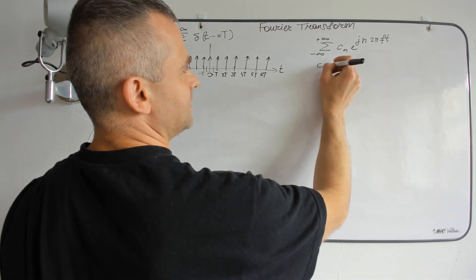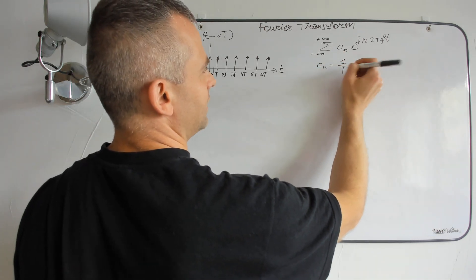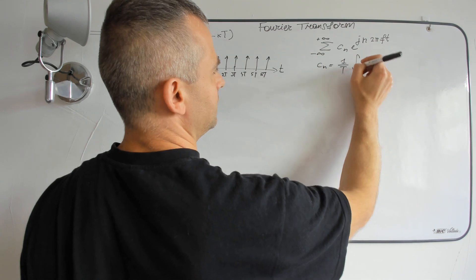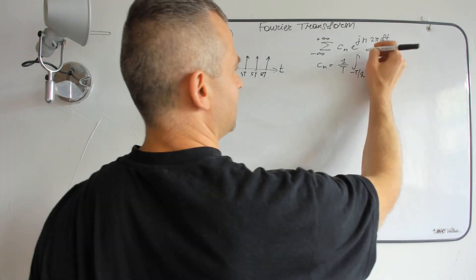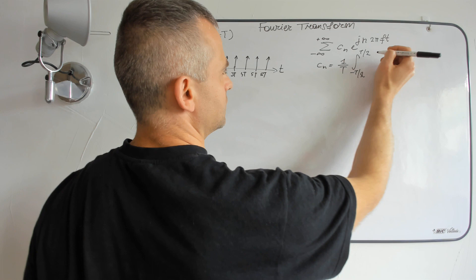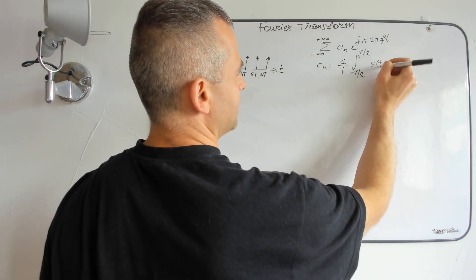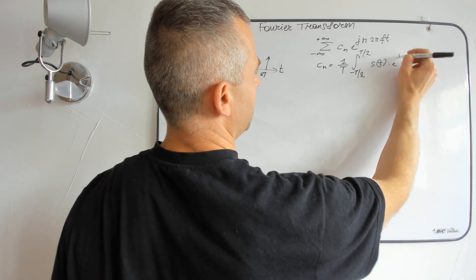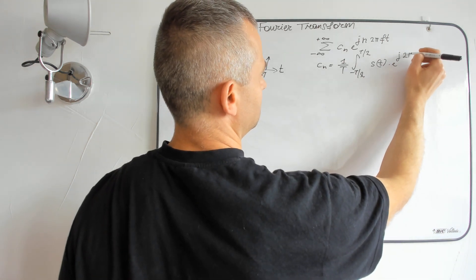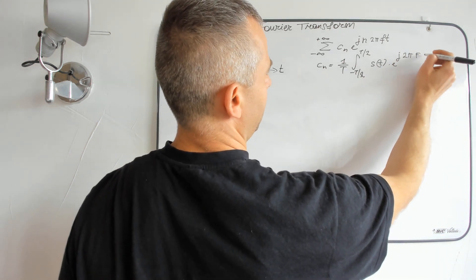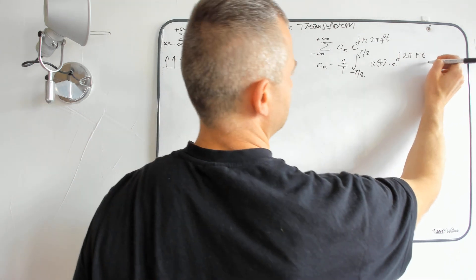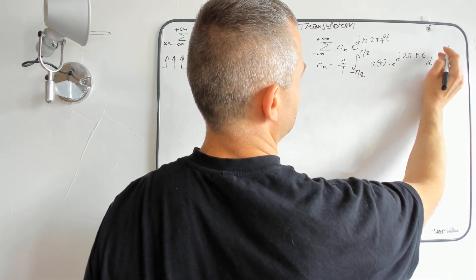Well, where cn is equal to 1 divided by T, integral from minus half of a period to half of a period of sin 0 multiplied by exponential j2πf dt.